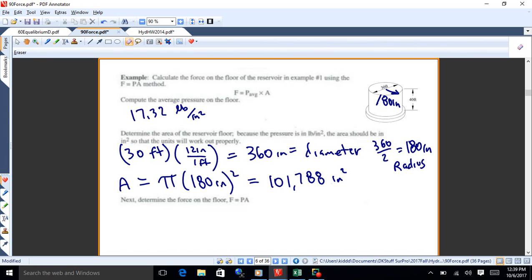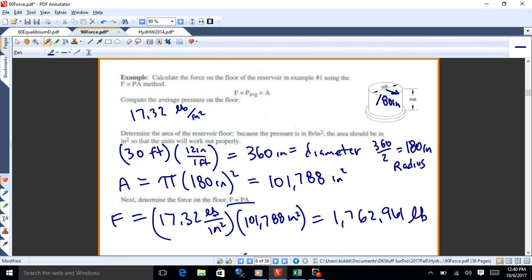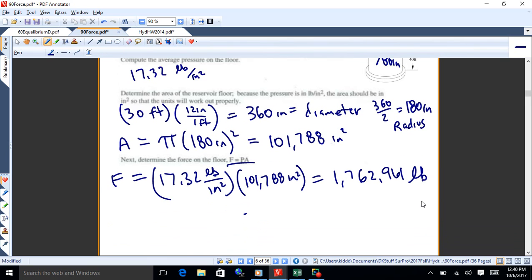So what you would do next is you would just multiply together. So F equals PA. So the force, which is the weight, is the pressure, which is 17.32 pounds per square inch, times lots and lots of square inches, 101,788 inches squared. So if you multiply that out, you get a lot of pounds. So it's 1,762,961 pounds is what I got. Again, you might round to get a little different number.